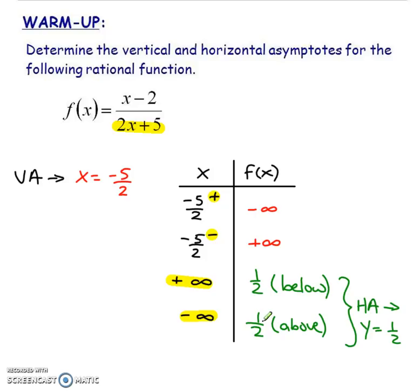Now something I want to bring your attention to is when we had a one at the top. When we were dealing with the reciprocal of linear functions, we always got a zero as our horizontal asymptote. But notice that we didn't this time. We actually got a number. So our horizontal asymptote this time is y equals 1 half.